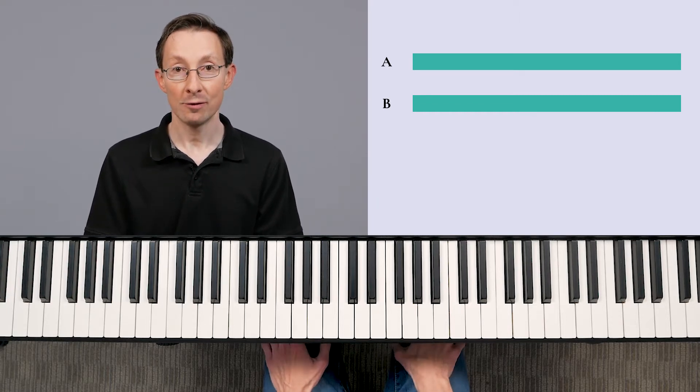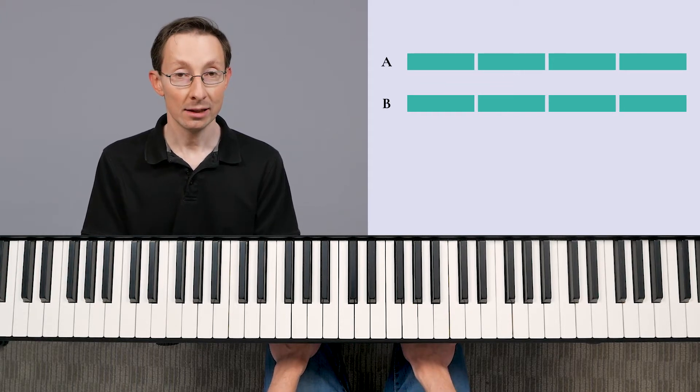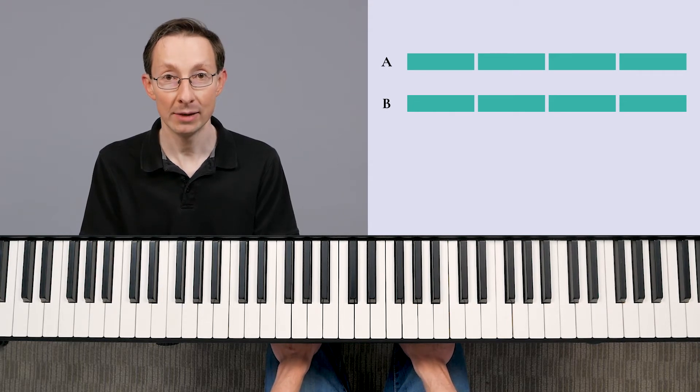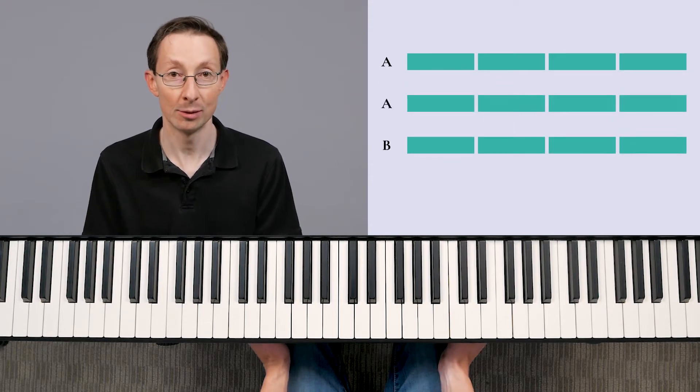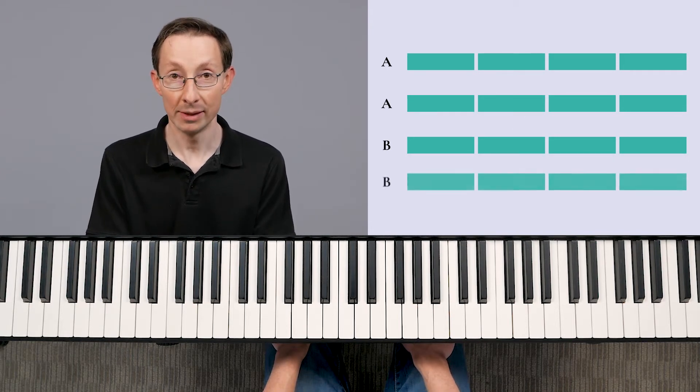And so each part is four bars. So the A section is four bars, and then usually in most jigs and reels, the A section is repeated verbatim, and that's called a double reel or a double jig. And then there's a B section, which is also four bars and then repeated verbatim.